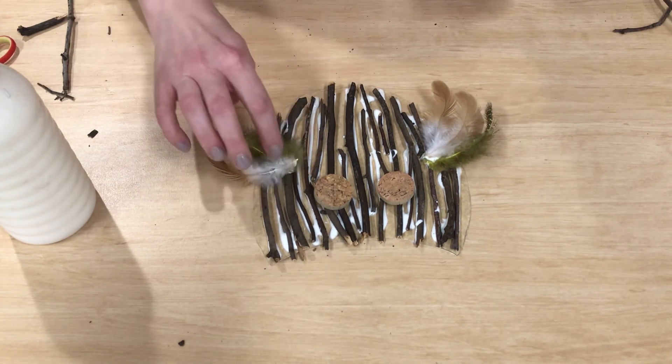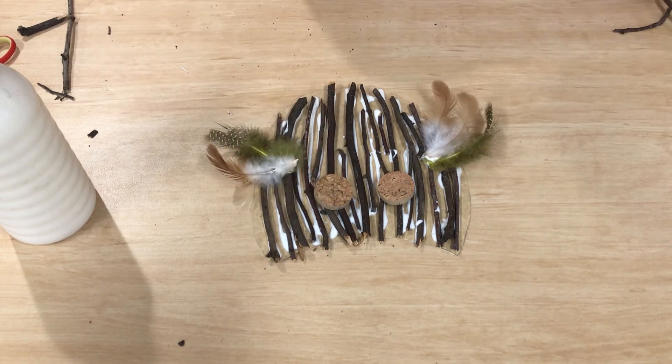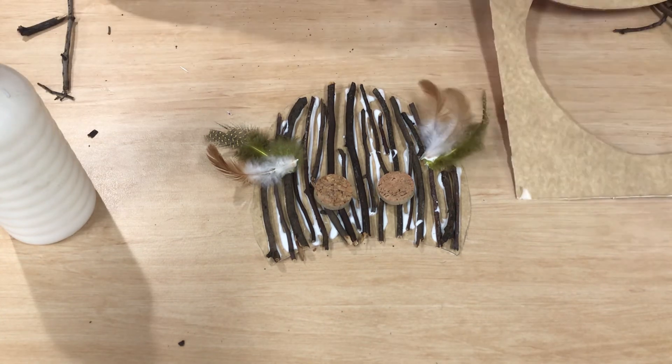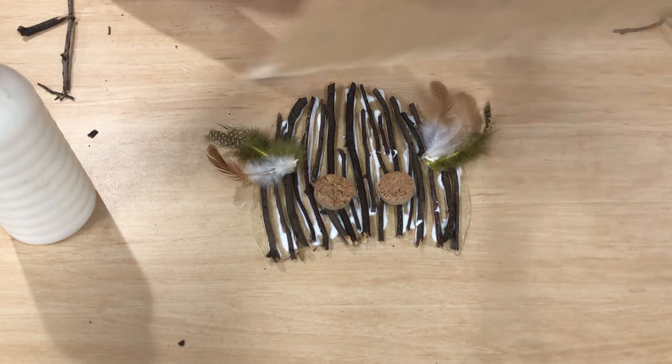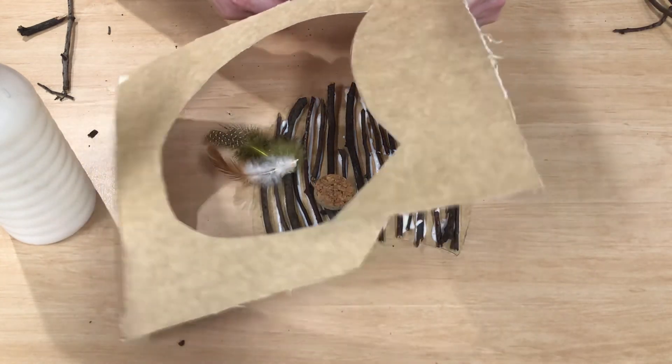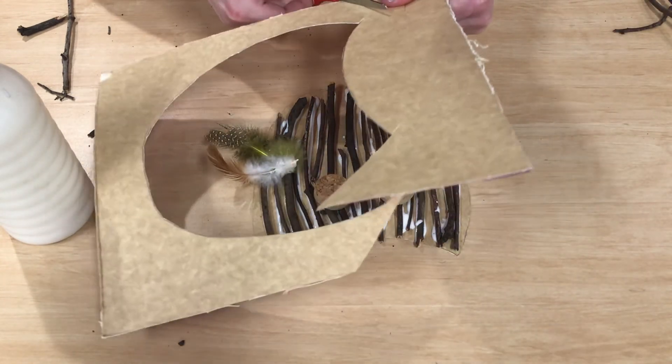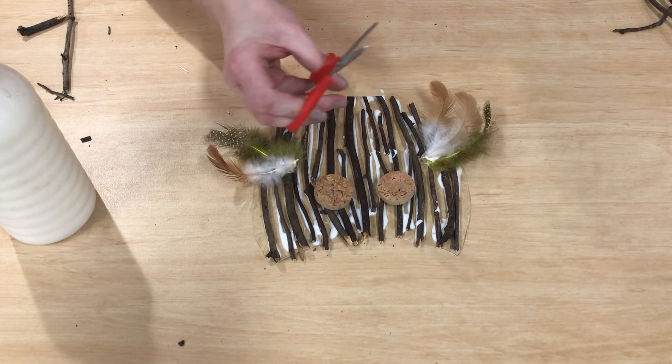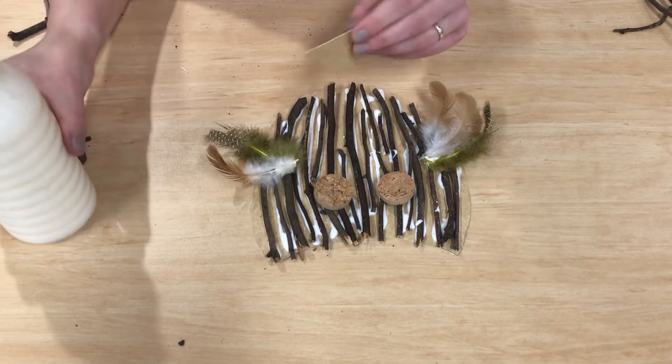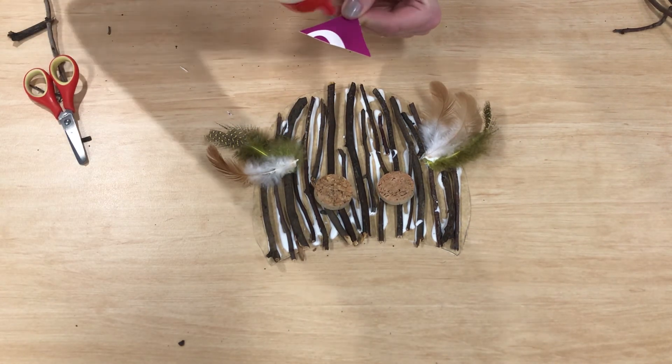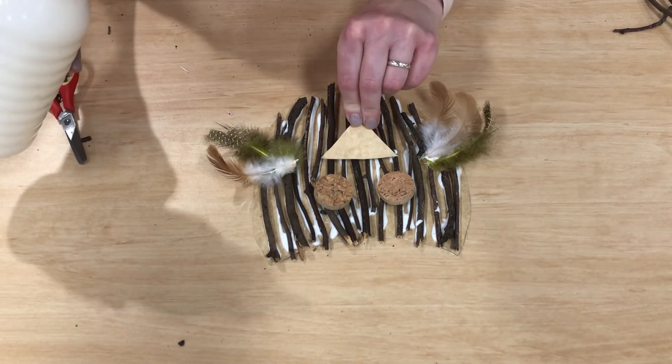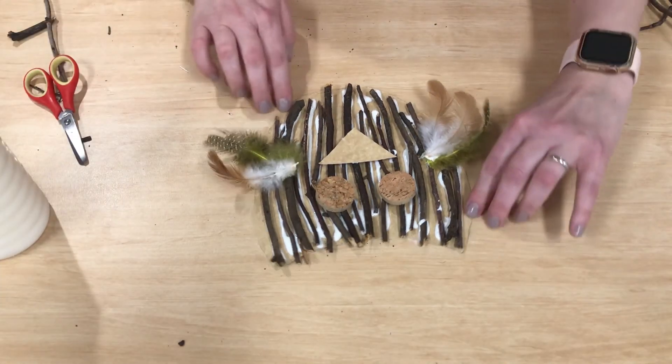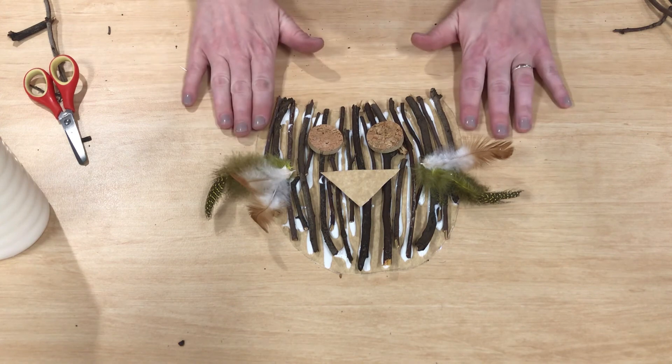Okay, so our owl's got some wings. He's got some eyes. But what about his beak? Let's give him a beak. So this is where you'll need to use some of the cardboard from your owl shape. Now let's stick his beak on. There we are. So our owl now has a beak. There we go. All done.